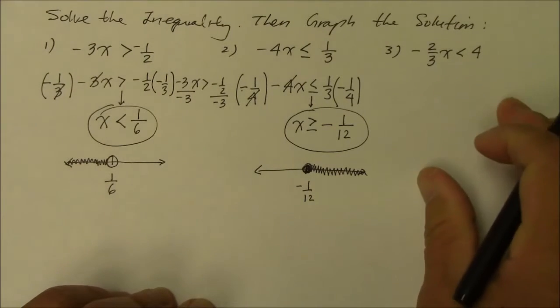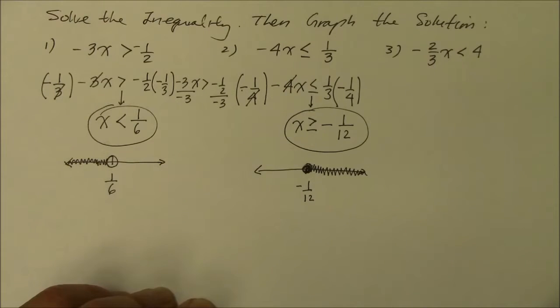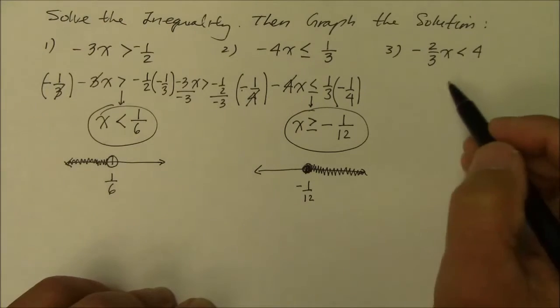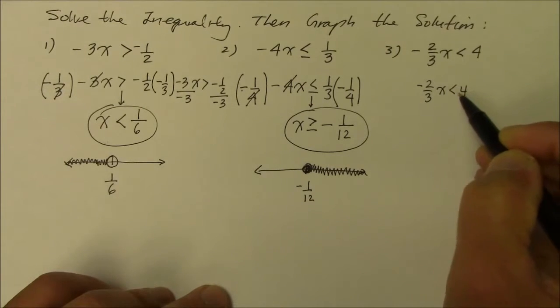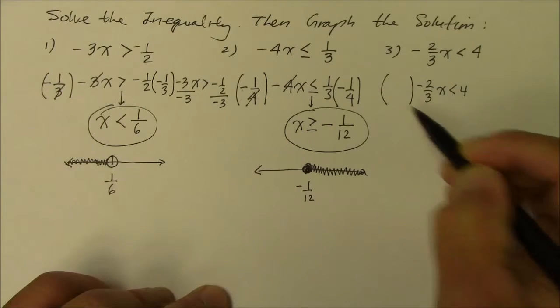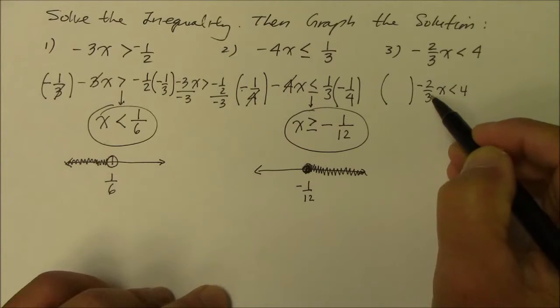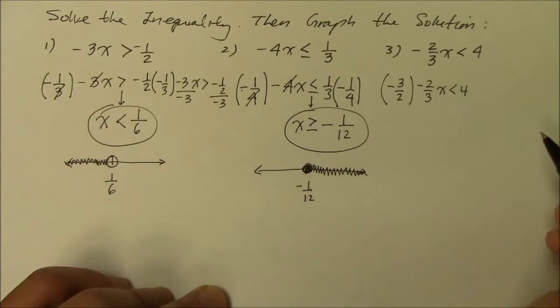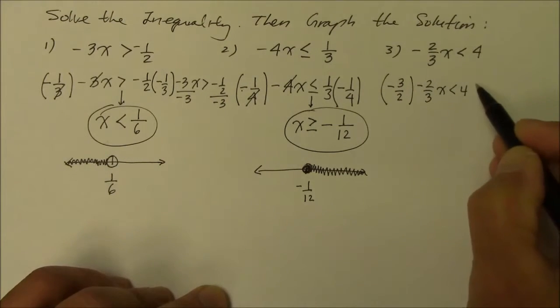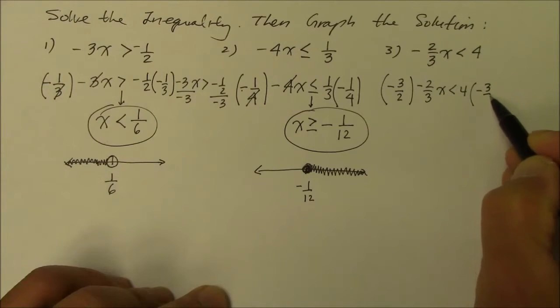And, finally, number 3. You getting the hang of it yet? Here I go. So, I'm going to copy that one more time to give me some room. And, now, I'm going to multiply the reciprocal of negative 2 over 3. Hey, this one's already in quotient form. So, it's going to be negative 3 over 2. And, I must multiply that to the right side of the inequality as well.